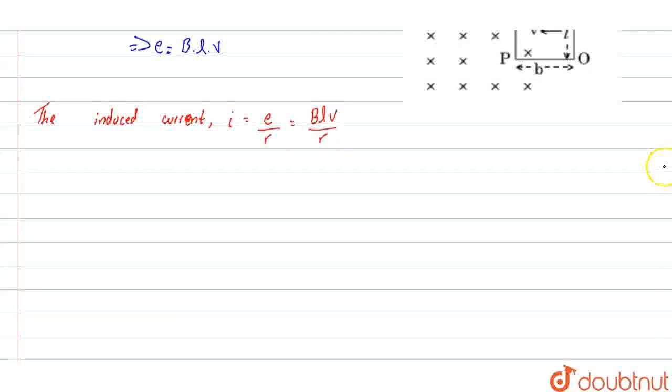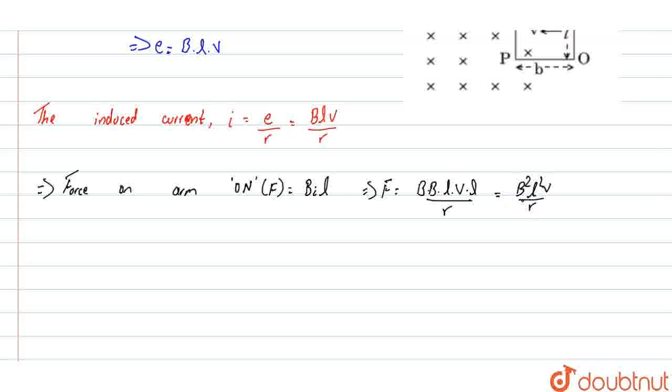Now, the force on arm ON is given by F equals BiL. When we substitute the value of i, we get the force as F equals B squared L squared V by R.